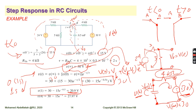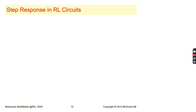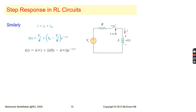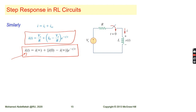Similarly, for inductive circuits, we have analogous equations. The step response for current is: I(t) = I(∞) + [I(0) − I(∞)]·e^(−t/τ), or equivalently I(t) = (Vs/R) + [I0 − (Vs/R)]·e^(−t/τ). After a long time, the inductor acts as a short circuit and the steady-state current is Vs/R. The response shape depends on whether Vs/R is greater or less than I0.